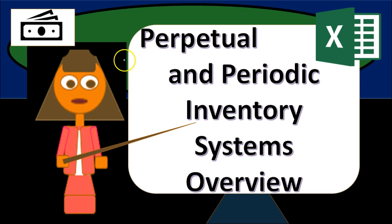The periodic system is typically used when we have a less sophisticated system, and the perpetual system is typically used when we have a more sophisticated system, oftentimes with some type of scanner allowing us to record transactions automatically as we make them.